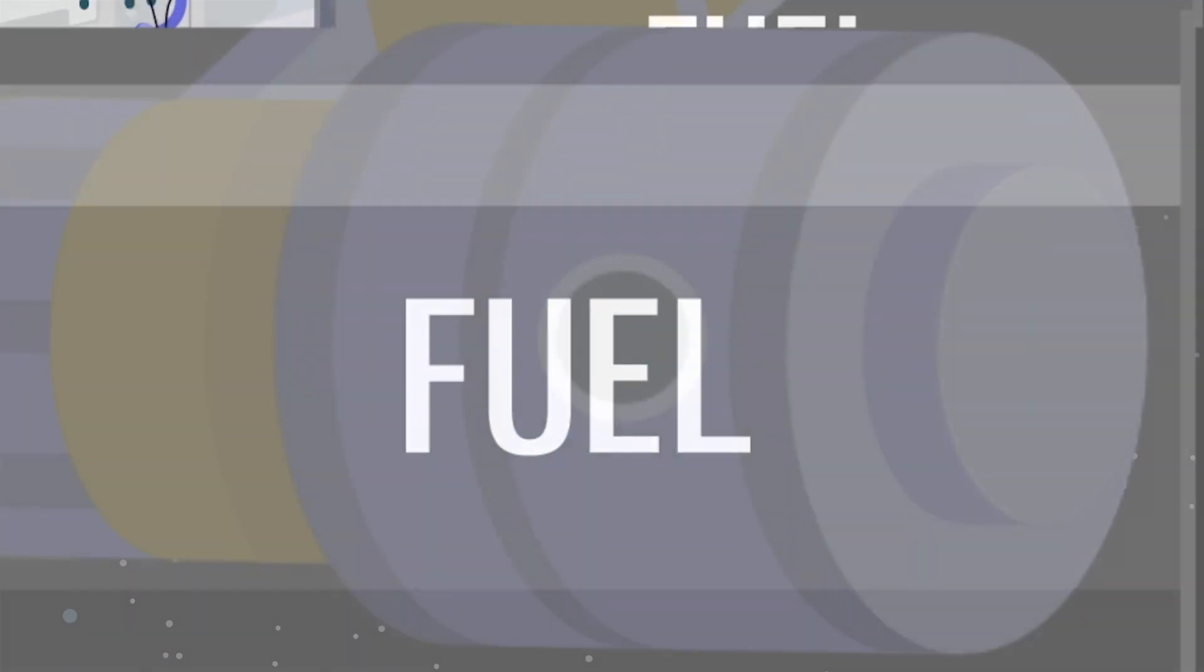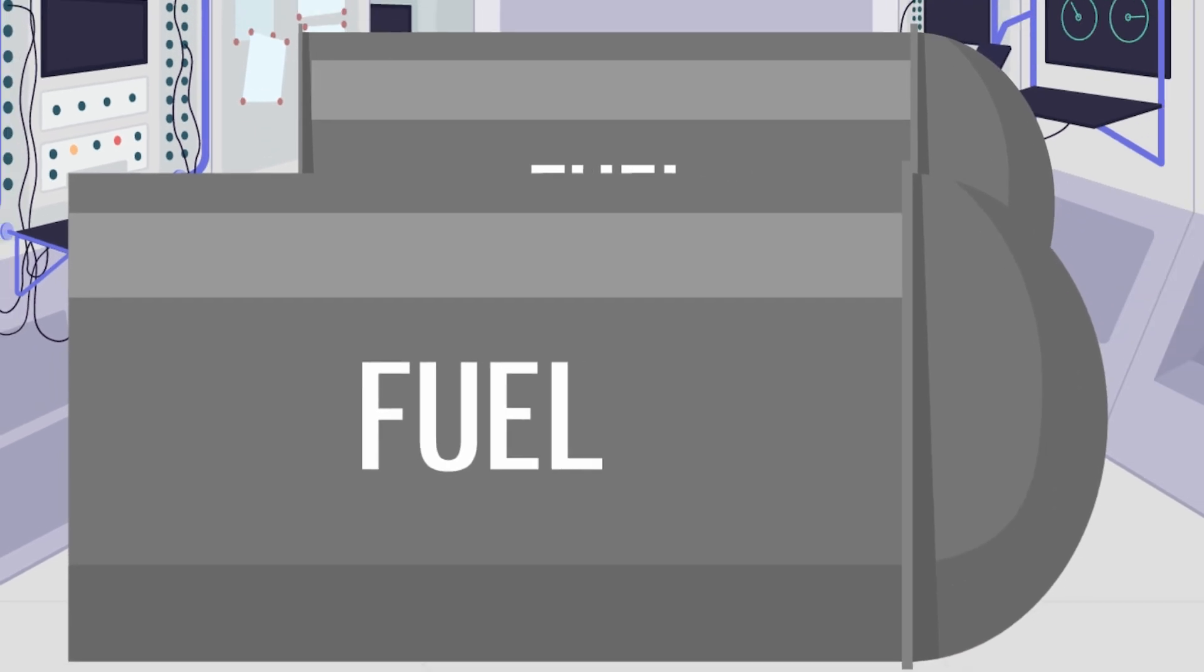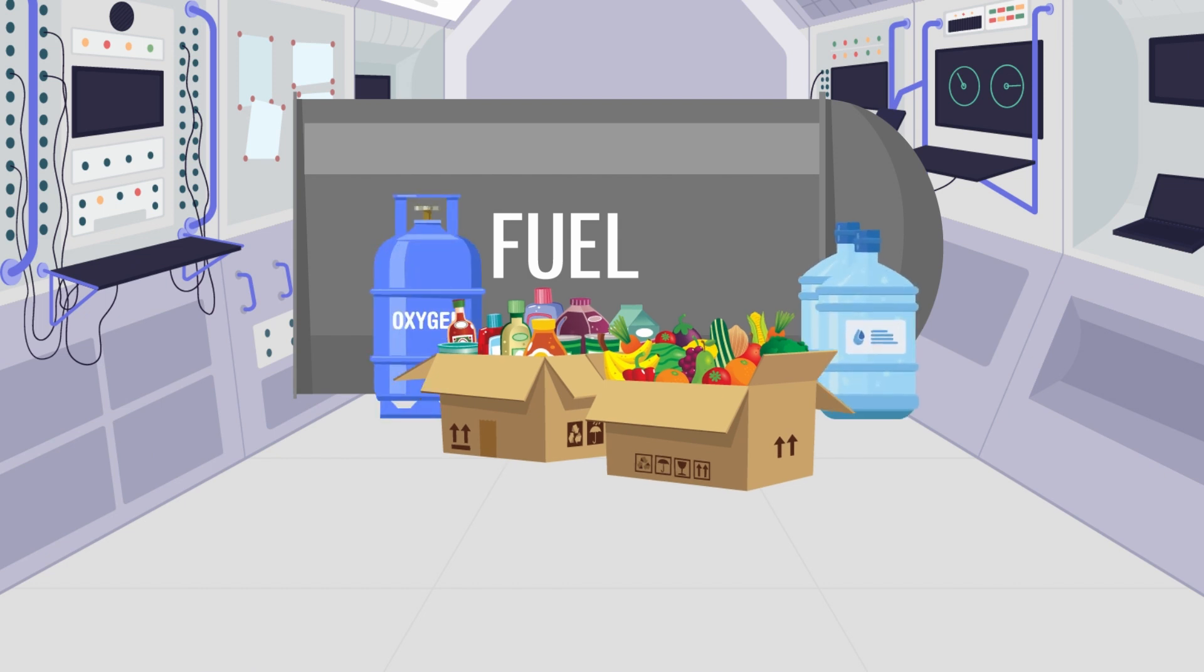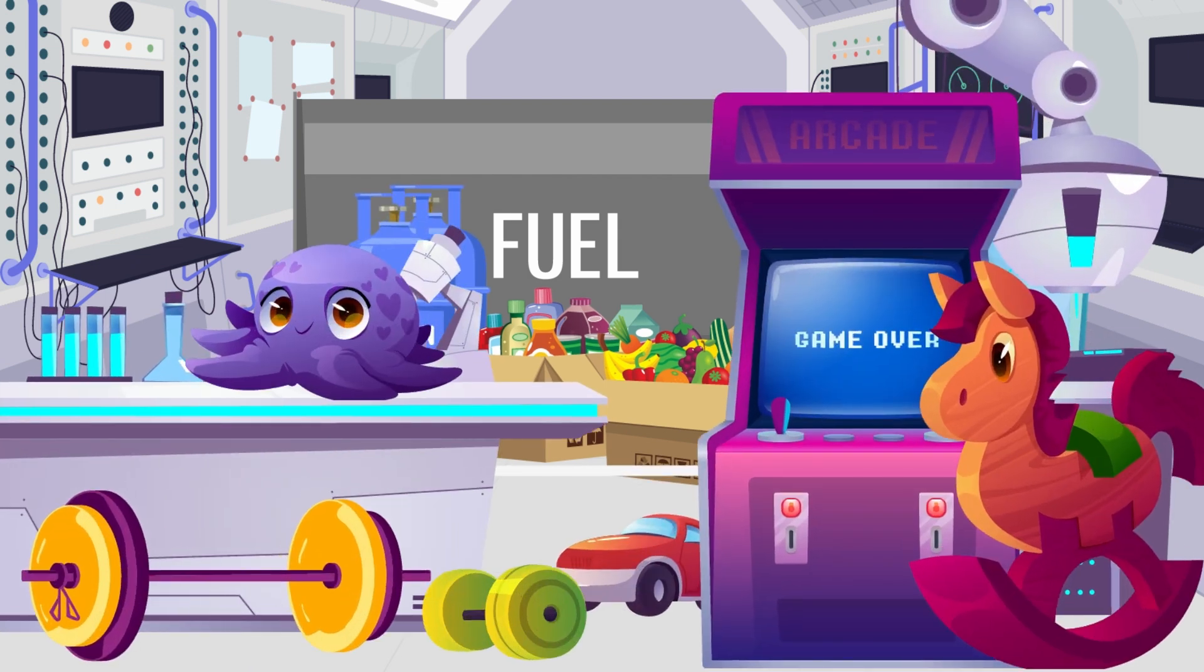More efficient fuel means you need less of it to make the trip. Less fuel means the astronauts have more room on board for food, water, air, research equipment, and anything else we might need while on Mars.